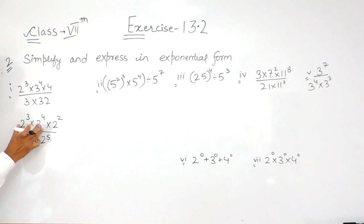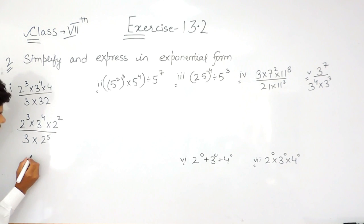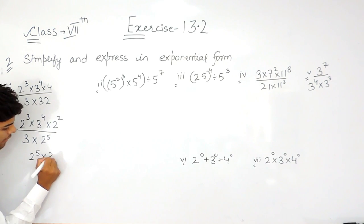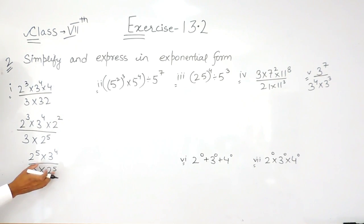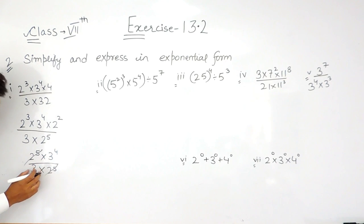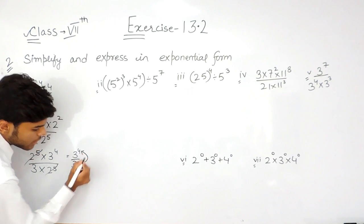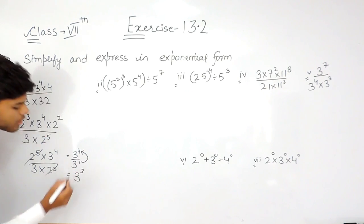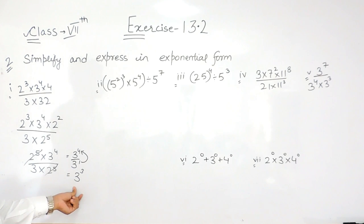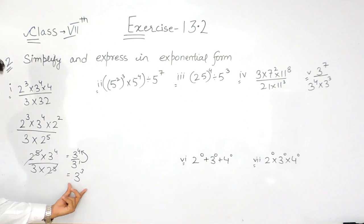In the numerator, these two are having the same base, so their powers will get added up. That will give us 2 to the power 5 multiplied with 3 to the power 4, upon 3 into 2 to the power 5. Now these two are the same terms, they can be cancelled out. So it is 3 to the power 4 upon 3 to the power 1. This one will go in the numerator and its sign changes — here it was plus, then it will be minus. So our answer will be 3 to the power 3, or we can say that our answer will be 27. But as the question said that we have to express them in exponential form, so our answer will be 3 to the power 3.